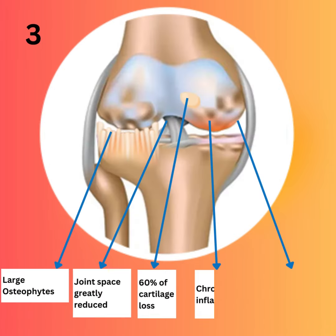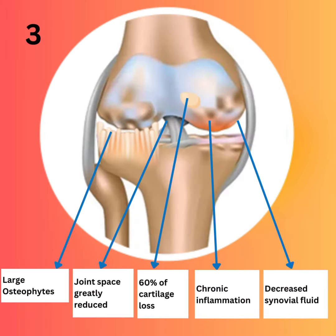In the third stage, there is 60% loss of cartilage, decreased synovial fluid that aids in lubrication of the joint, chronic inflammation, joint space is greatly reduced, and there is development of large osteophytes.